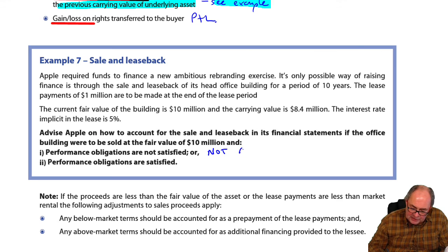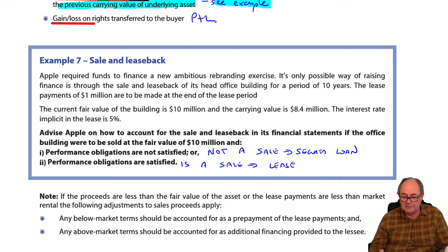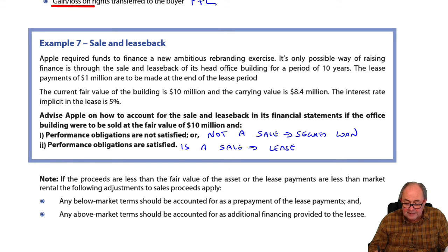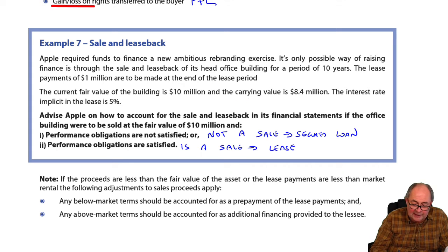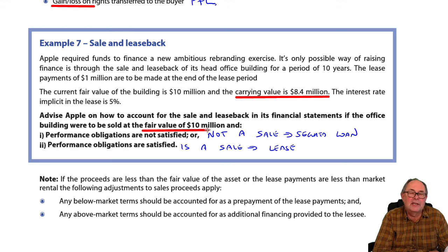So: what happens if it's not a sale? And what happens if it is a sale — that's the messy one. If it's not a sale, it will be a secured loan. If it is a sale, we're going to have a lease coming into process. The data shows that the carrying value is 8.4 million and they are selling this asset for 10 million.